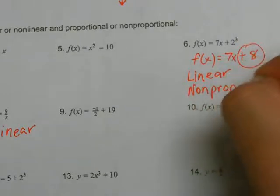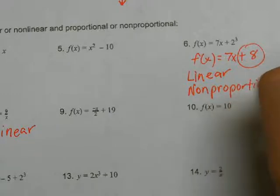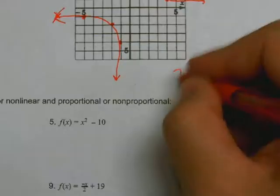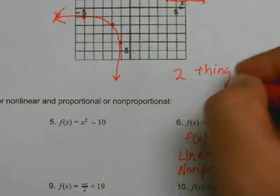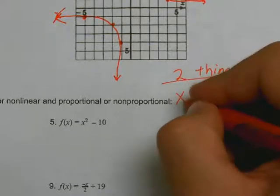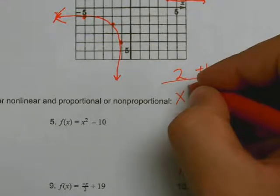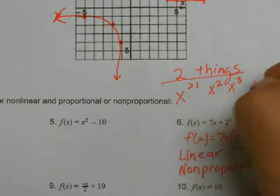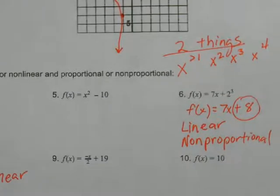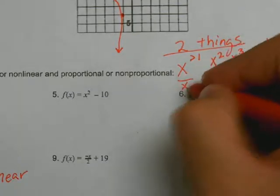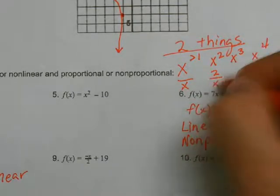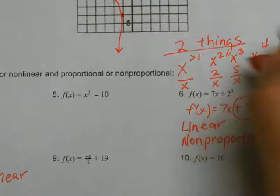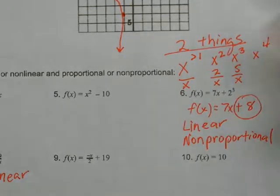So when you're looking at all these, you're looking for two things. Does the x have an exponent greater than one? For example, x squared, x cubed, x to the fourth. And then the second thing: is x in the denominator, such as 2 over x, 5 over x? Those are your two things you look for. If it doesn't have that, then it's going to be linear.